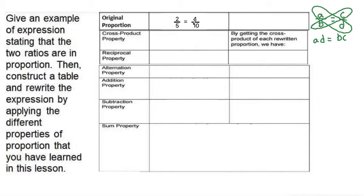Using the cross product property, we can take 10 multiply it by 2 to make 20, and that would be equal to 5 multiplied by 4 which is also 20. So that verifies that this proportion is in fact equal to each other because we got the same number on both sides.